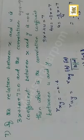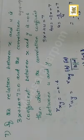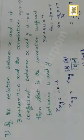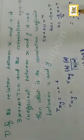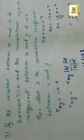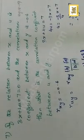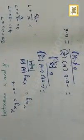Another example: 3x + 4u + 7 = 0 and the correlation coefficient between x and y is −0.6. Correlation coefficient between u and y is asked. From the equation: 4u = −3x + 7, so u = (−3/4)x + 7/4. The coefficient of x is −3/4. The answer is 1.6 with the same sign.